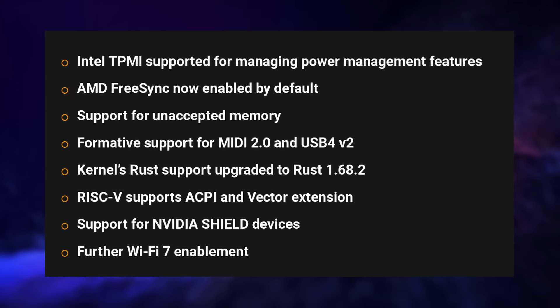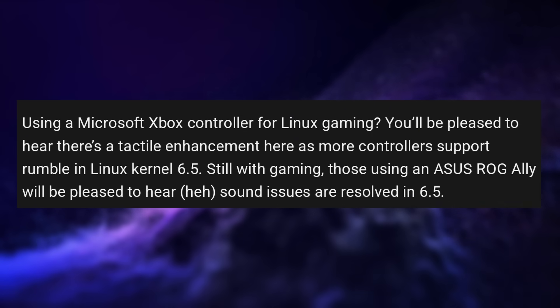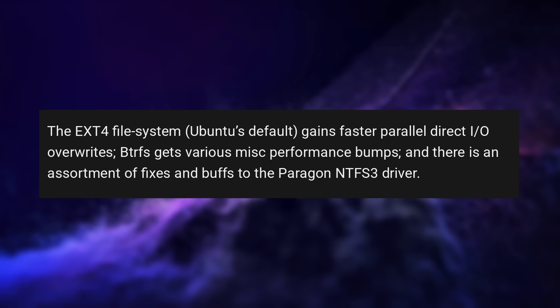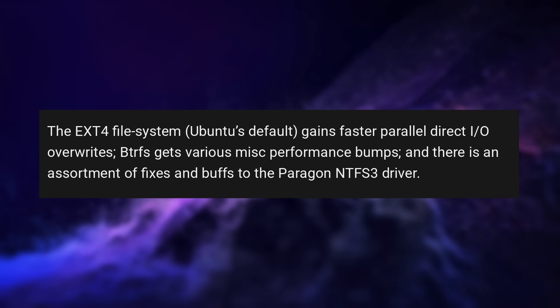Support for RISC-V is improved with ACPI and vector extensions, Wi-Fi 7 got some work, and NVIDIA Shield devices are now supported by the mainline kernel. Xbox controllers are better supported, especially in the rumble department. The EXT4 format got faster direct IO, Btrfs got some performance improvements, and the NTFS driver also got some love. It's a very nice update you should get soon if you don't run an LTS or stability-focused distro, and I should be able to take advantage of both the Ryzen and Intel 12th gen improvements.